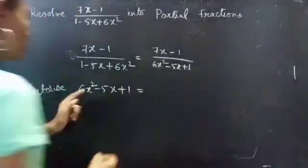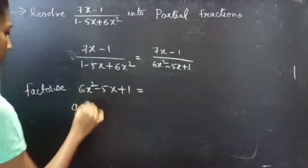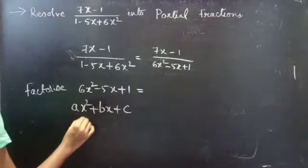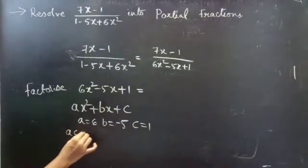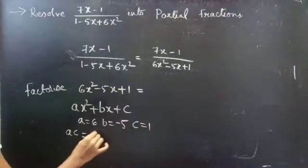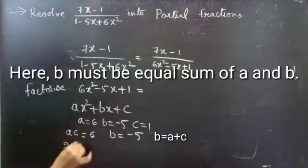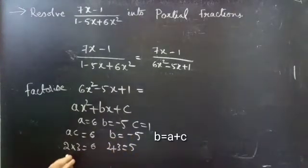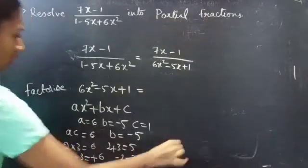To split −5x, consider the general quadratic polynomial Ax² + Bx + C. Comparing with 6x² − 5x + 1, we get A = 6, B = −5, C = 1. Now A × C = 6 × 1 = 6, and we need two numbers that multiply to 6 and add to −5. We find −2 × −3 = 6 and −2 + (−3) = −5, which is correct.